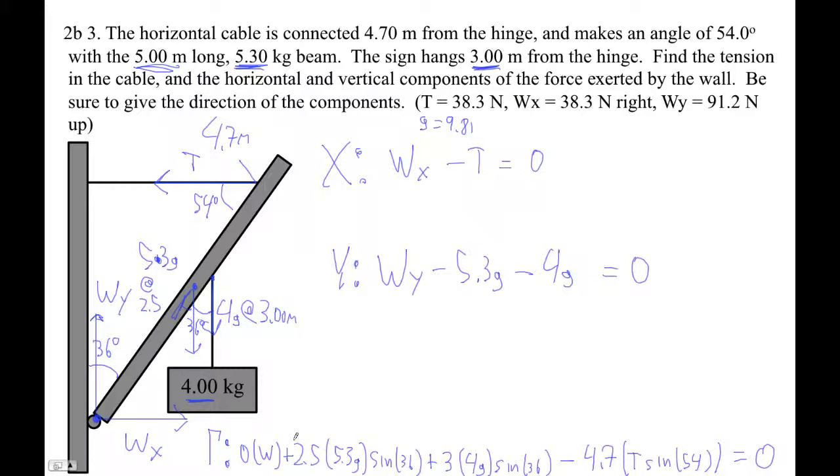Okay, so I'm going to bust this out, all of this, right? And then just divide by 4.7 and sine of 54. That should give me T. All right. Ooh, I wonder how long I'm going to be able to work with bad batteries here. Okay, so 2.5 times 5.3 times 9.81 times sine of 36 plus 3 times 4 times 9.81 times sine 36. Let's get an answer. Okay, let's divide by 4.7. Divide by sine of 54. 38.29.